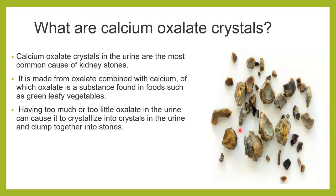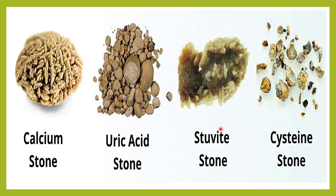Calcium oxalate is the most common form of stone seen in the kidney. Kidney stones exist in different categories — calcium stones, uric acid stones, struvite stones, cysteine stones, etc. — and calcium stones are the most common in kidney stone patients. These small calcium oxalate crystals precipitate, come together, and can form large stones.